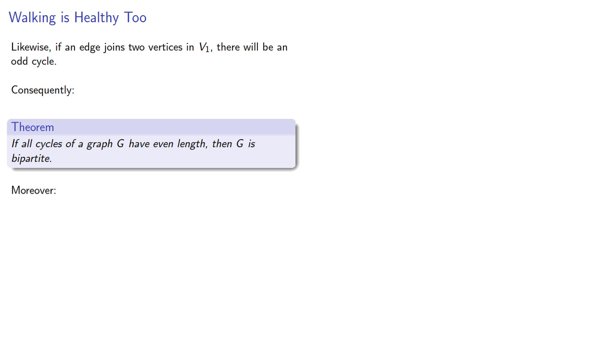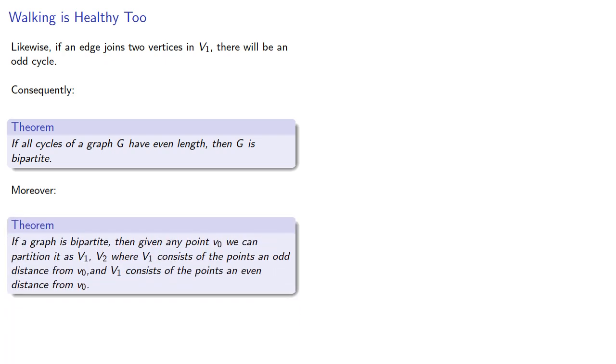Moreover, the proof tells us how to split up the vertices. If a graph is bipartite, then given any point v0, we can partition it as v1 and v2, where v1 consists of the points an odd distance from v0, and v1 consists of points an even distance from v0.